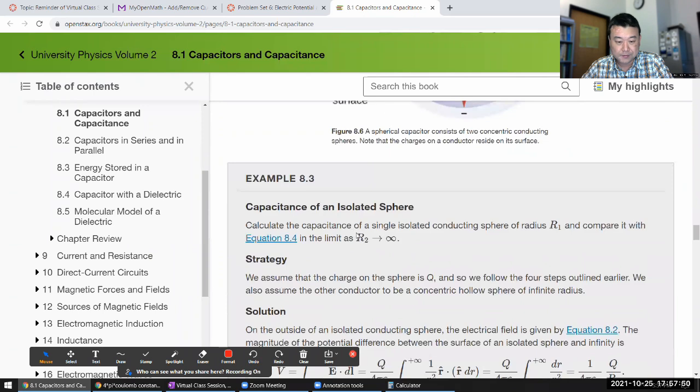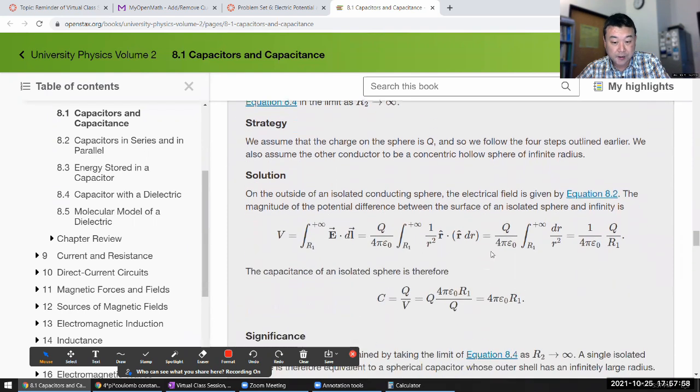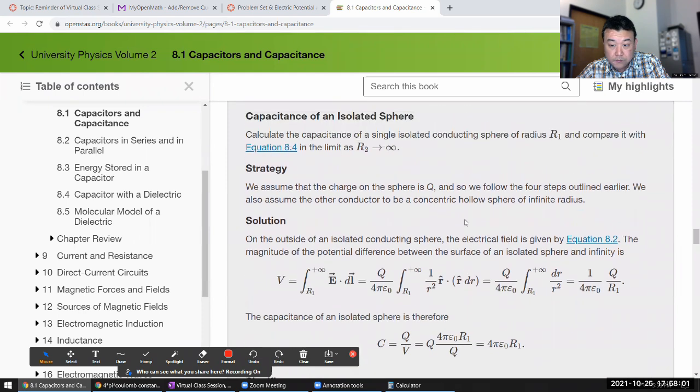The way they are doing it is they are taking the capacitance that's derived for this setting here in 8.4. And then they are taking the limit as this radius R2 goes to infinity. So, when you do that, as in the limit R2 goes to infinity, so that outer shell is infinitely large, then you get this answer.